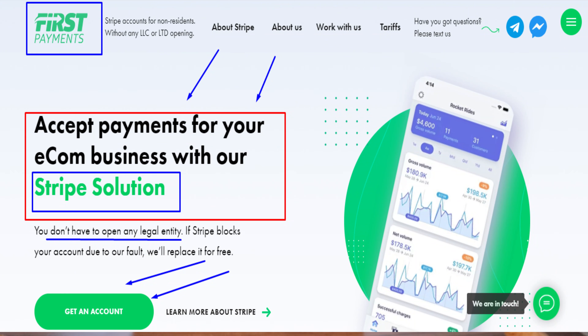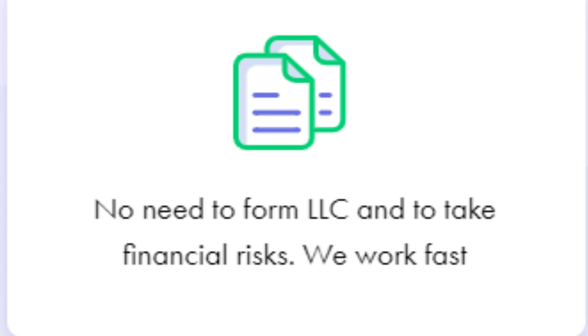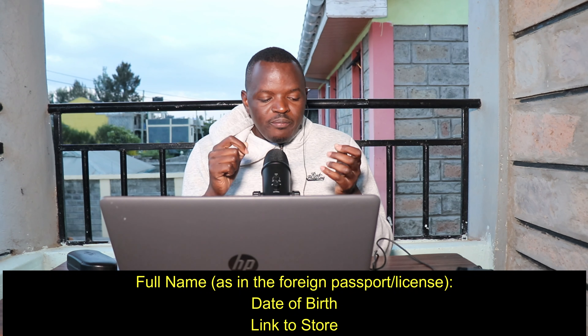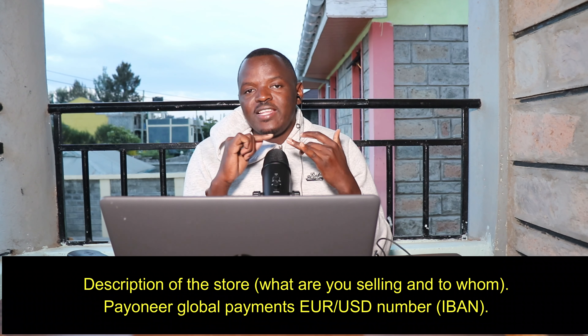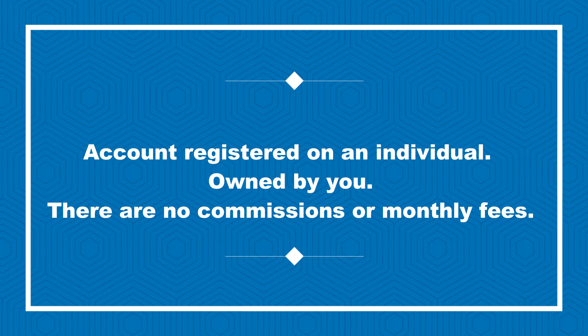There is a solution — a company called Fast Payments Solutions. They have expertise in creating personal Stripe accounts for you. They don't need any legal documents; all they need is a scanned photo ID. They'll need you to have a Payoneer account and an email to connect your Stripe account to. You don't need to hide your identity or use anyone else's identity. They'll use your real identity to form your real Stripe account.